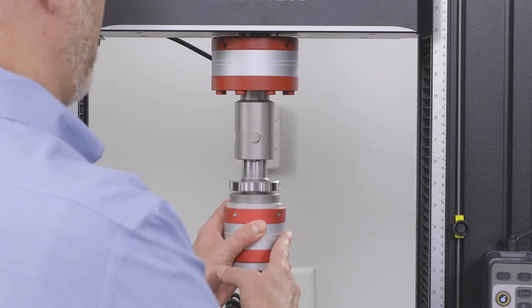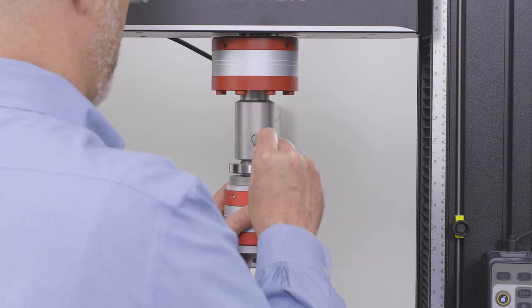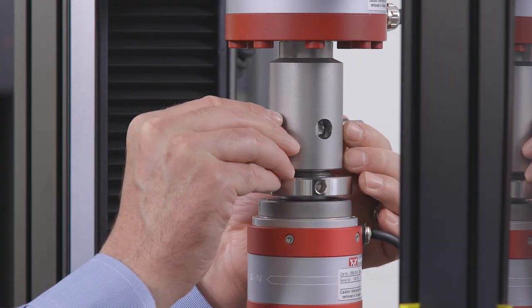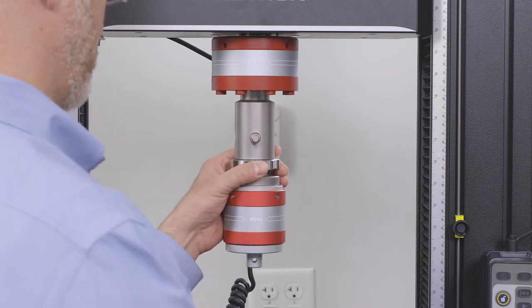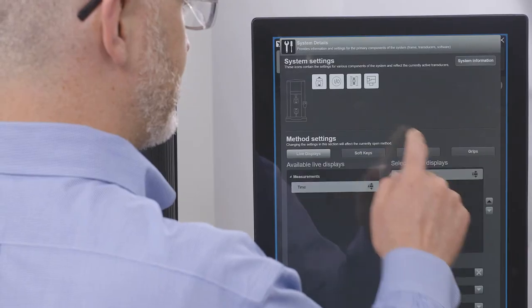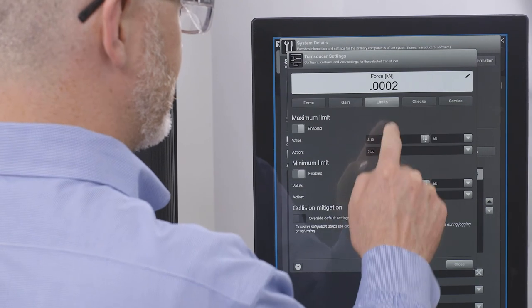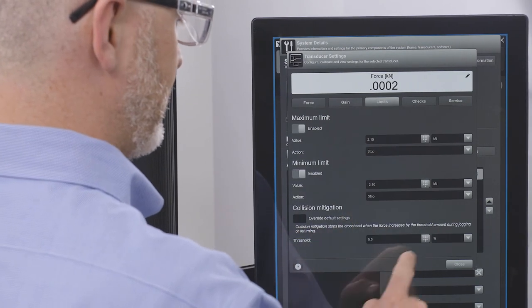Collision Mitigation is always active and cannot be turned off. The sensitivity of its response is tied to the capacity of the load cell. For some applications, a user may want to change this sensitivity. Adjustments can be made in the load cell menu under Limits.